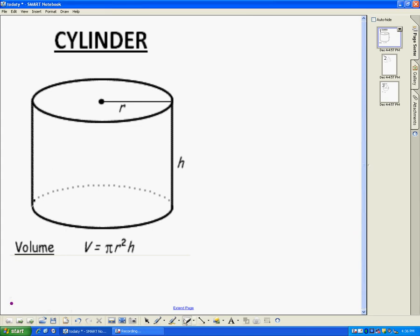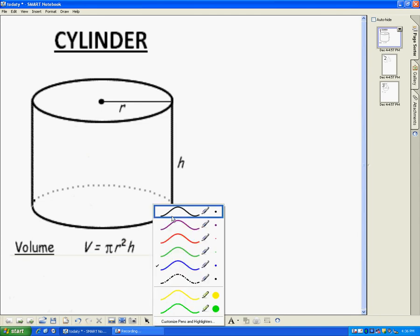All right, today in class we talked about volume, and volume is the amount of space or the amount that fills an object. The way you find volume is you use this formula. We're only going to talk about three objects: cylinder, cone, and sphere today.